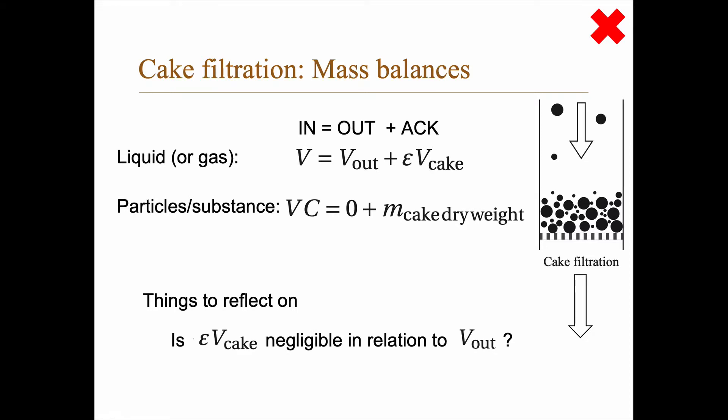Things to reflect on. Is this volume here the porosity times the V cake? Is that negligible in relation to V out? I mean, if you filtrate 10 cubic meters, and then epsilon V cake, if that is small, let's say it's half a liter or something, then perhaps you don't need to take that into account. Another thing is that I already mentioned, is the concentration in the outlet really zero? Perhaps not. And then if it's not, you need to adjust here. And the problem is that the concentration might actually vary as the filtration goes on.